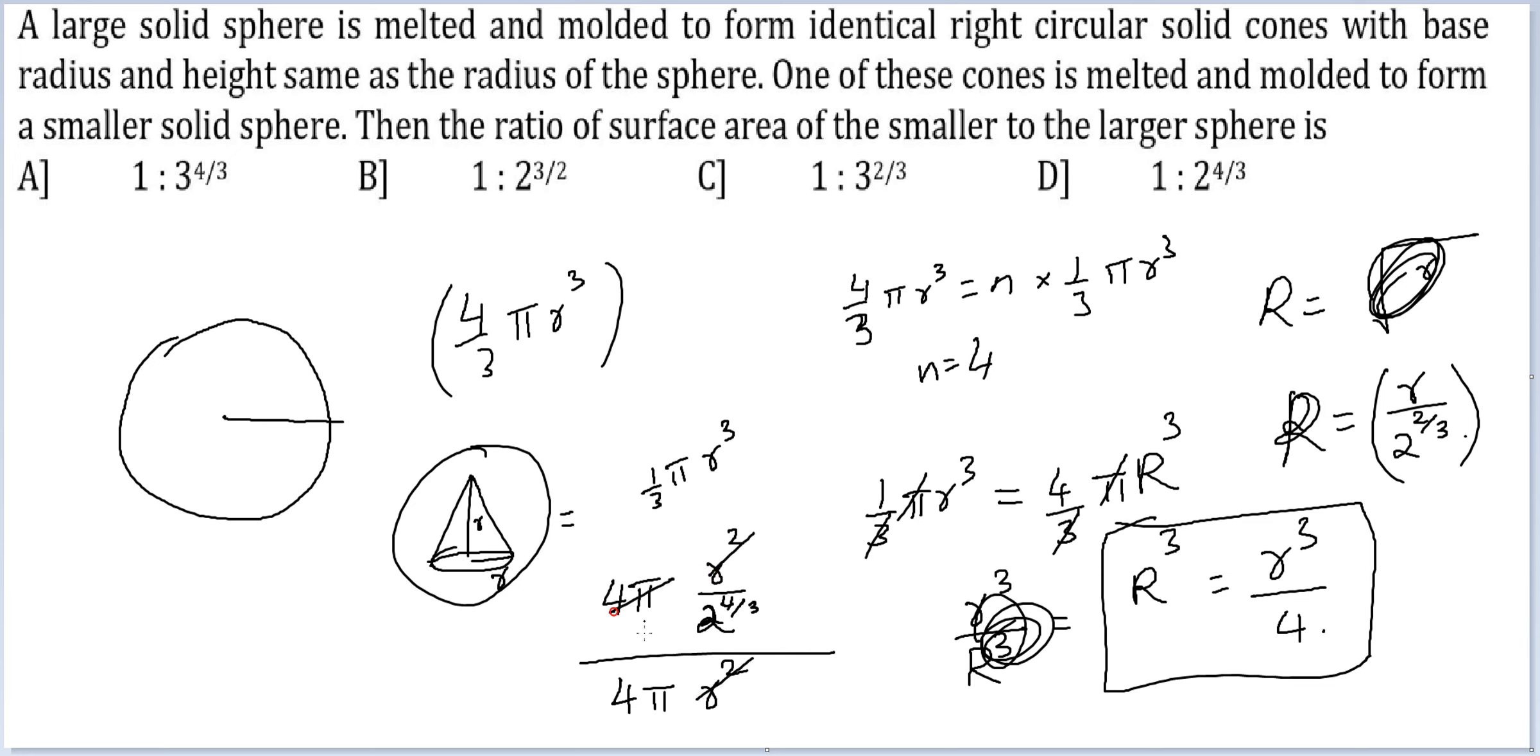Okay, so this R square, this R square cancels. 1 by 2 raised to the power 4 by 3 should be the final ratio, which is option B.